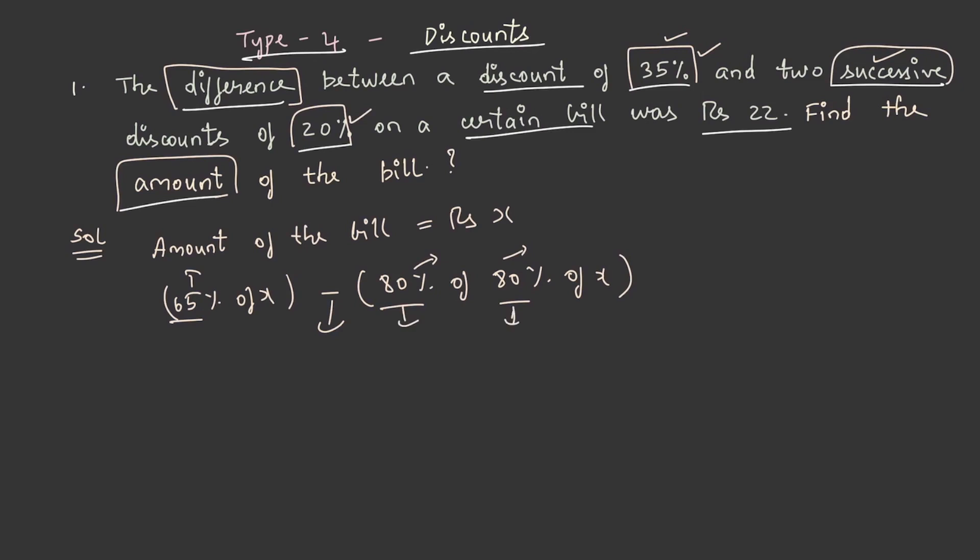And it said that this value is equal to 22, so equate this to rupees 22. 65 by 100 into X minus 80 by 100 into X is equal to 22.